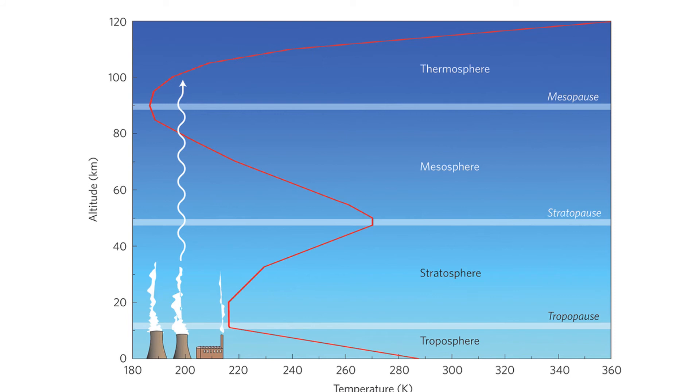Then in the mesosphere, the temperature starts to decrease again. The mesosphere is the coldest place on Earth and has an average temperature of around minus 85 degrees Celsius.